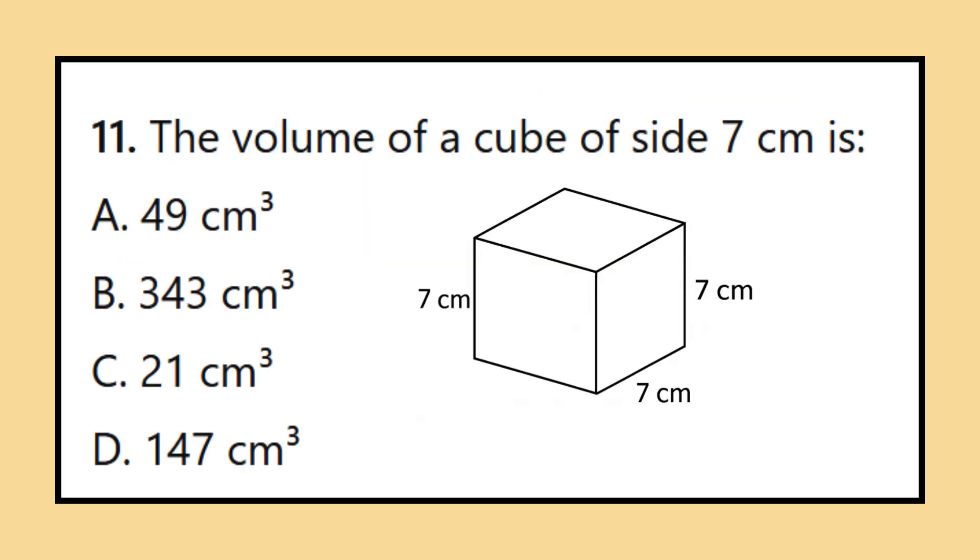Question 11: The volume of a cube of side 7 centimeters is. A. 49 cubic centimeters, B. 343 cubic centimeters, C. 21 cubic centimeters, D. 147 cubic centimeters.